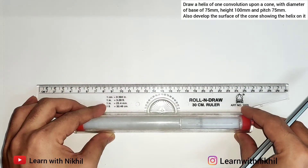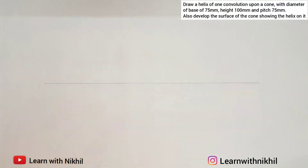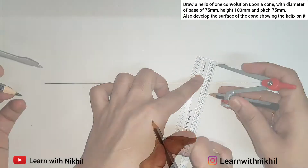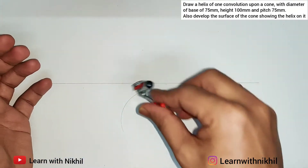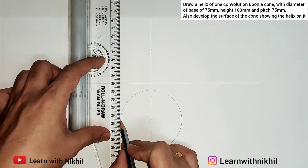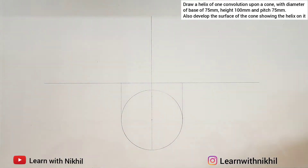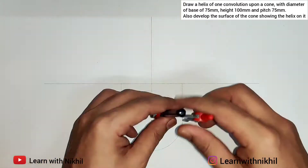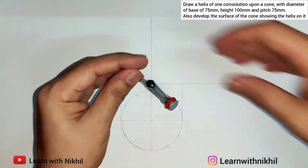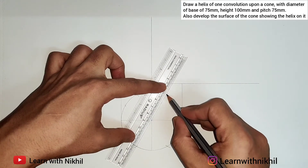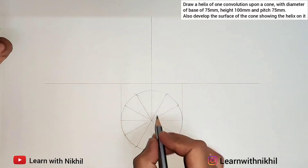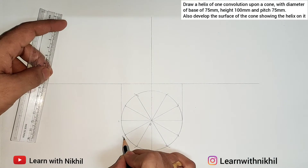I'll draw a straight horizontal line first. We will draw the top view — the top view of the cone will be a circle with diameter given as 75mm. From here I'll draw a circle with radius of 37.5mm, then draw a line passing through the center. As the circle doesn't have any sides, we'll divide it into 12 equal parts. You can divide into 6 or 8 equal parts — more divisions give more points to plot. I'll mark the center as O and the divisions as 1 to 12.